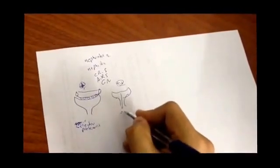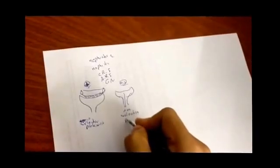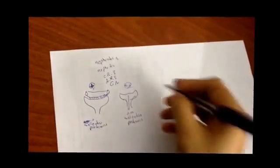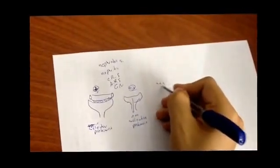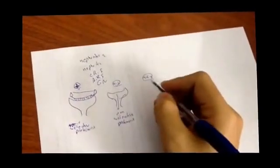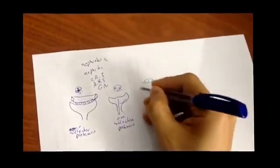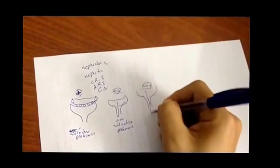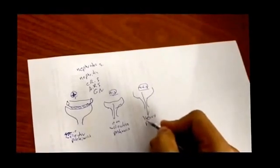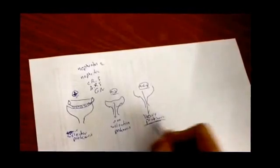In the third stage of glomerulonephritis, there will be huge damage, so there will be heavy proteinuria.